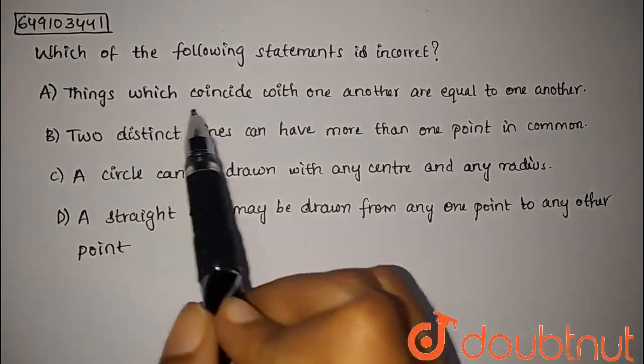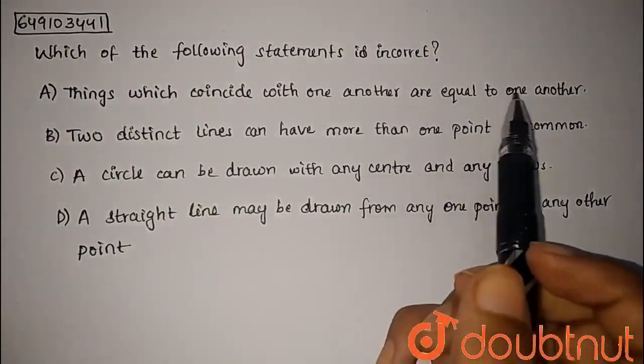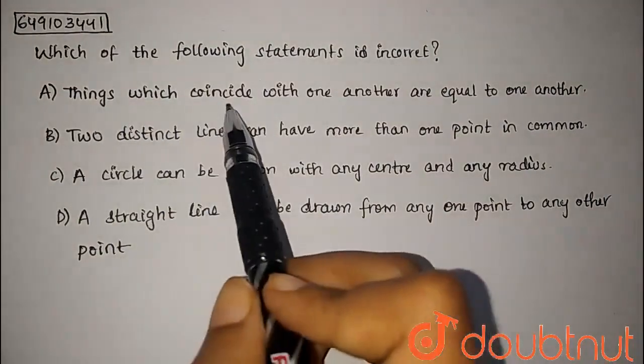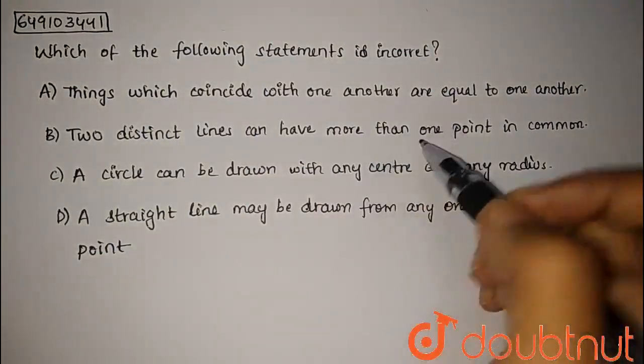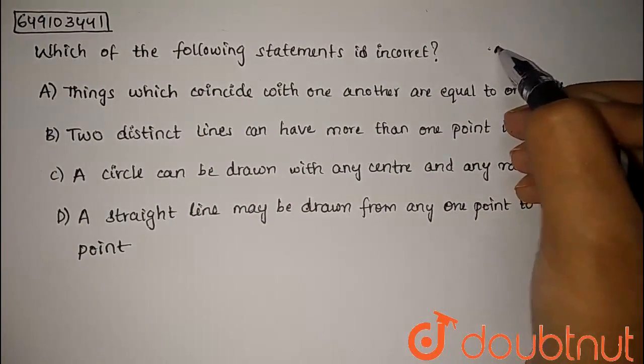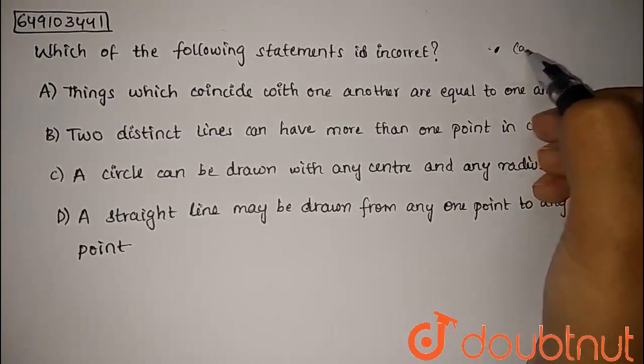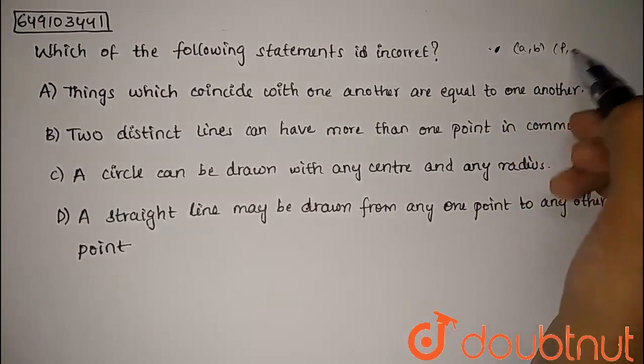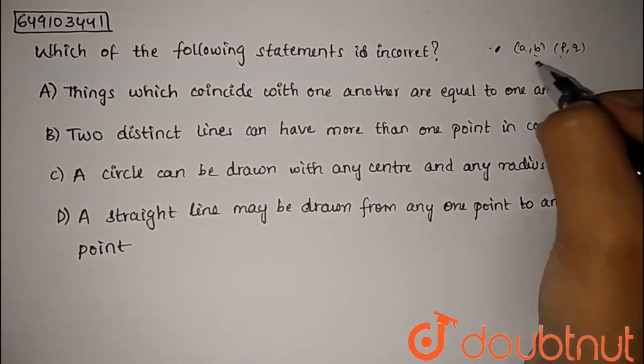First statement: things which coincide with one another are equal to one another. This is correct because if we have a point a, b and point p, q, these two points coincide.